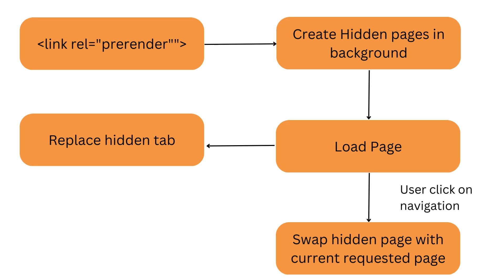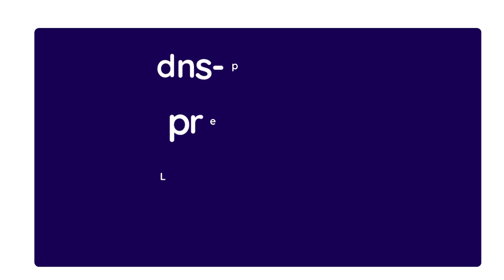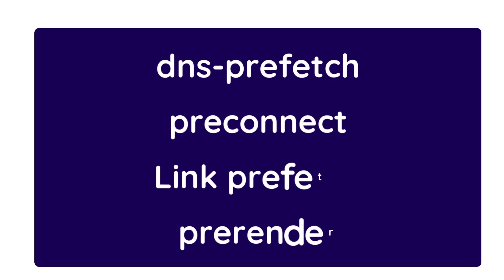The main difference between pre-rendering and prefetching is that in pre-rendering the entire page is downloaded in the background. If the user navigates to that page, the hidden page is replaced with the current tab and the requested page is displayed. All these techniques are very important, so you can try them and compare the before and after results of website performance.